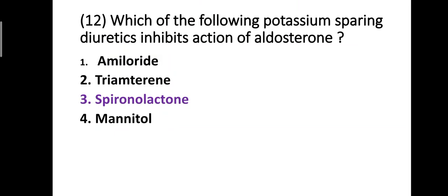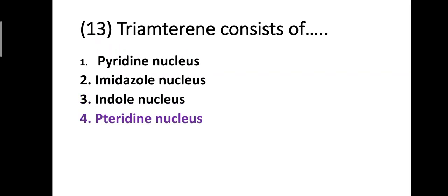Question number twelve: which of the following potassium sparing diuretics inhibits the action of aldosterone? Option one: amiloride, option two: triamterene, option three: spironolactone, option four: mannitol. The correct answer is option three — spironolactone inhibits the action of aldosterone.